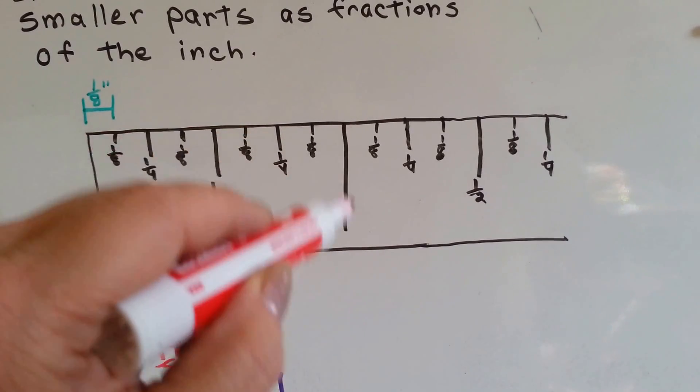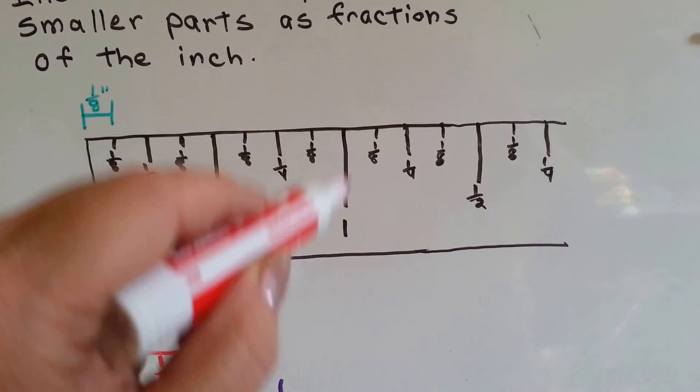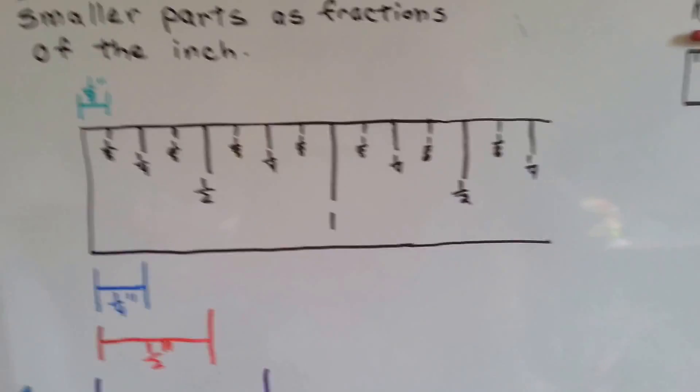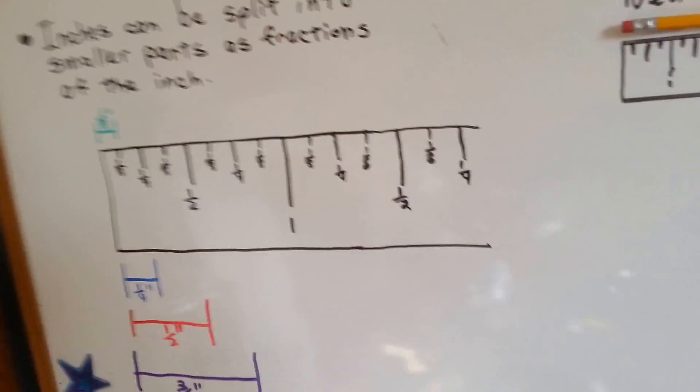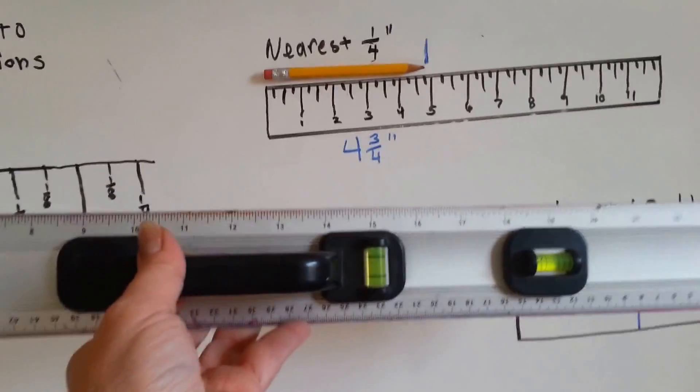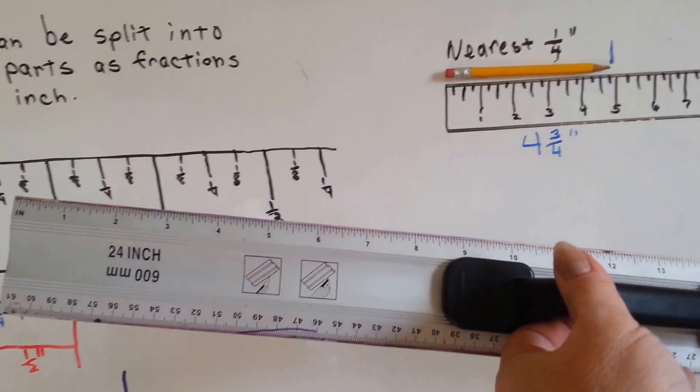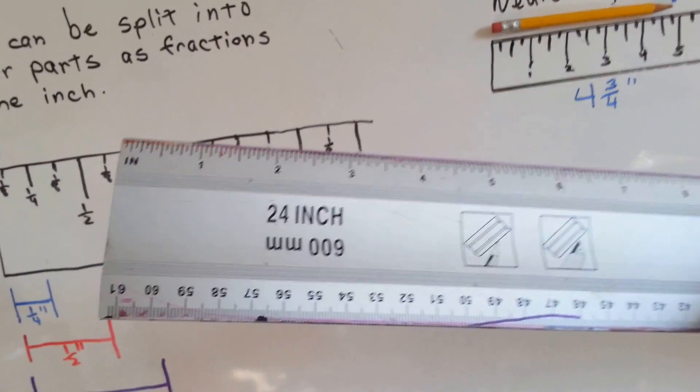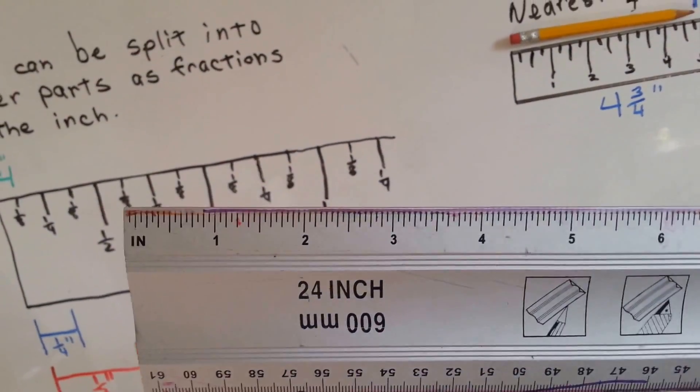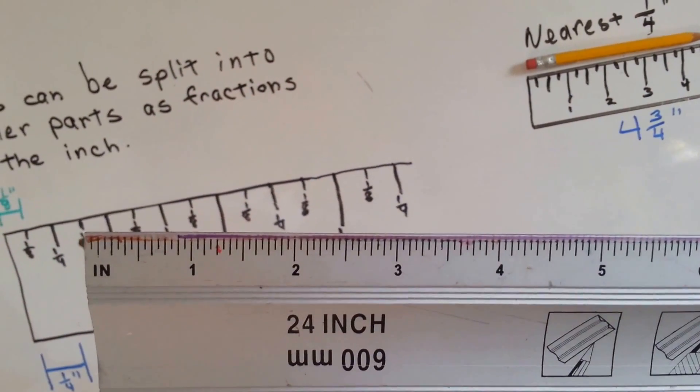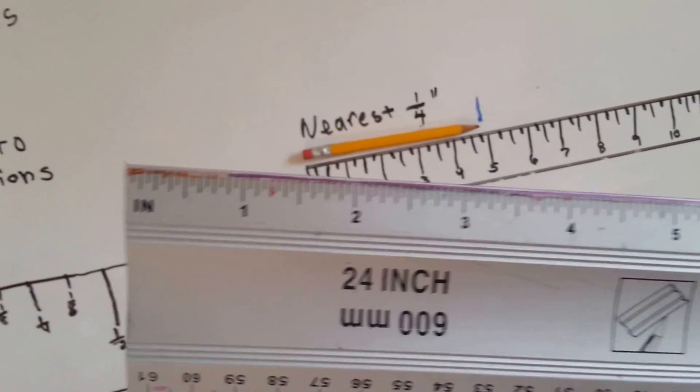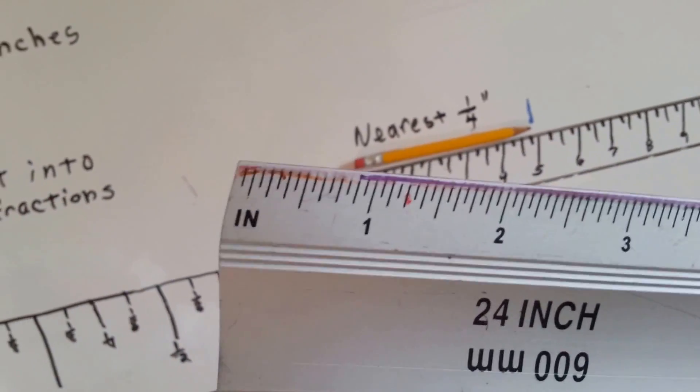So the biggest line is the inch line, and whenever you look at a ruler, I'm going to show you a real measuring one that I use to draw on my board. Look at this thing. I use this to draw on the board, and it's 24 inches long. The IN at the end there, that's for inches.